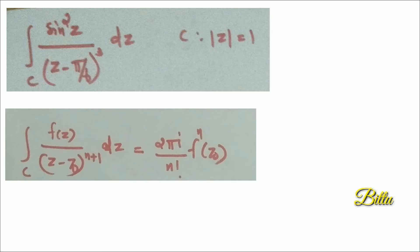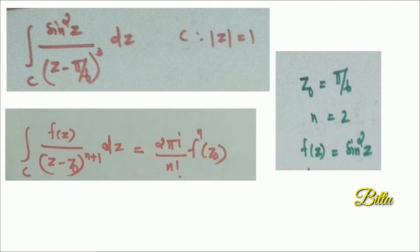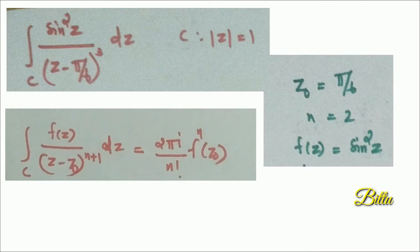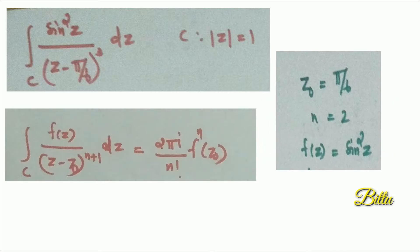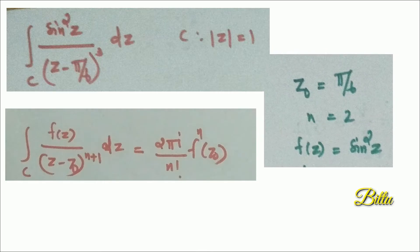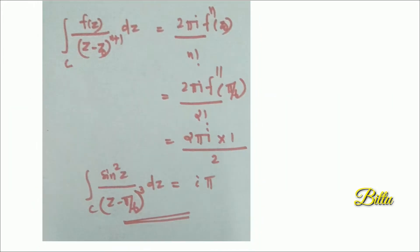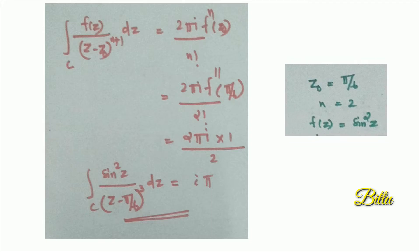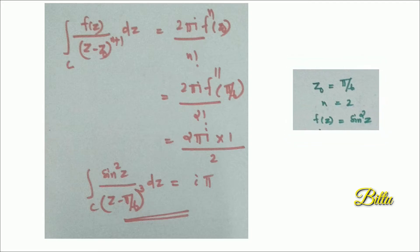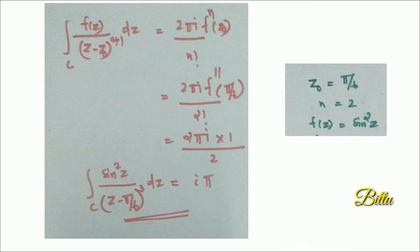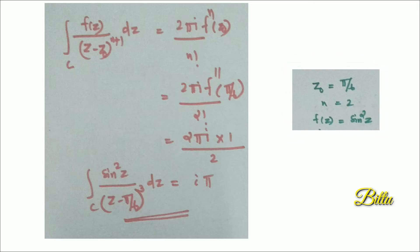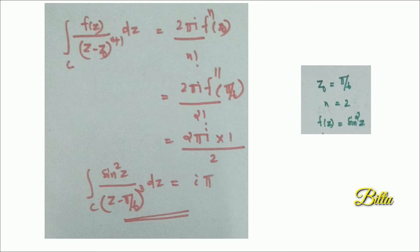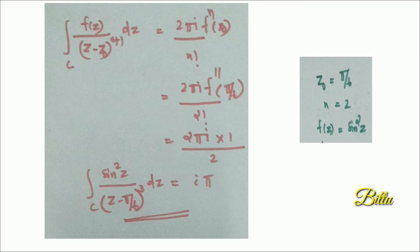We choose Z₀ = π/6, N = 2, and f(z) = sin²(z). By Cauchy's Integral Formula for derivatives, the integral over C of f(z) by (z − z₀)^(n+1) dz equals 2πi divided by n factorial times f^(n)(z₀). Putting N = 2 and Z₀ = π/6 gives 2πi divided by 2 factorial times f″(π/6). Next we evaluate f″(π/6).